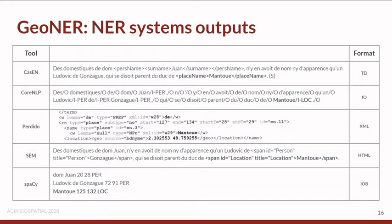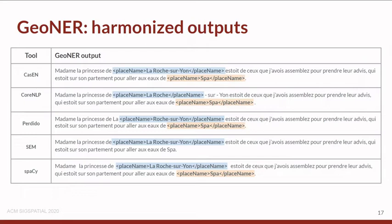Here is our output format for each tool: Kazen uses a formal TAI format after the synthesizer, CoreNLP uses IO format, PeridDo uses XML, Sem uses HTML, and Spacy uses the EOP format. After harmonizing the outputs, we achieve a simple place name tag format, transforming every different format from every different tool into the same unified format.